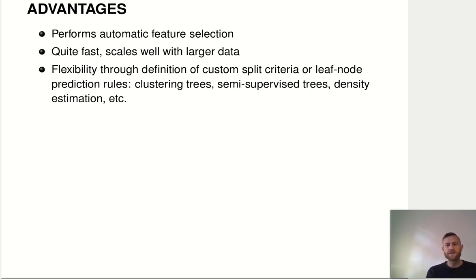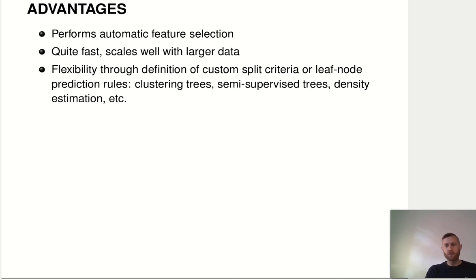Trees are also quite a fast method and scale well with large data, because the computations are all fairly simple. You split the data and compute means or relative frequencies on both sides of the threshold. There are ways to speed up that computation further. So this is a method that scales well with large data — it's quite fast.